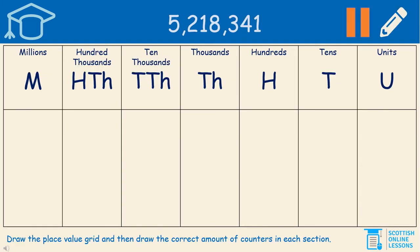Now it's your turn to have a go. Draw the place value grid — make sure you have seven columns and that you take the headings along the top. Then draw the correct amount of counters in each section. You can use your pencil or pen, or if you'd like to do them colourfully like they were a moment ago, you're very welcome to. Or even if you have place value counters, that would be even better. The number you're working with is 5,218,341. Pause the lesson now and complete this task.